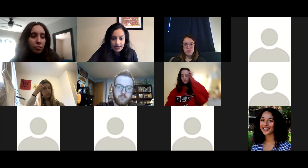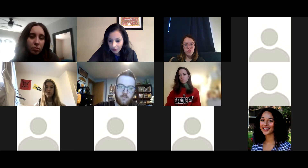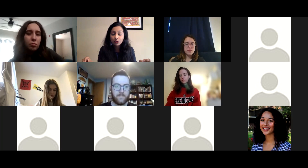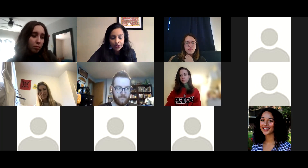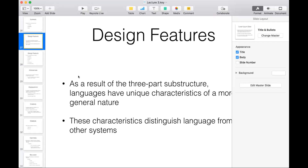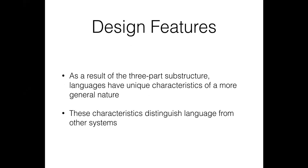I want to finish up Lecture 3, which we started on Tuesday, and then divide you into groups for a group activity. We started talking about the three substructures of language — phonology, morphology, and syntax. Languages also have other substructures like semantics, pragmatics, language variation, and typology, but in Linguistics 151 we're only really concerned with phonology, morphology, and syntax — the three things you need to create your own language.